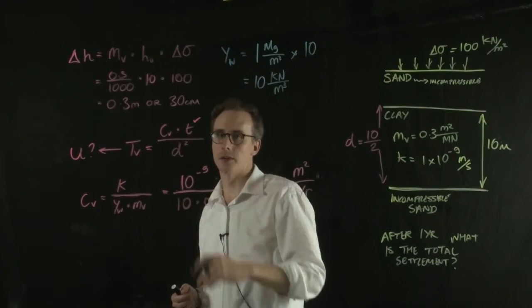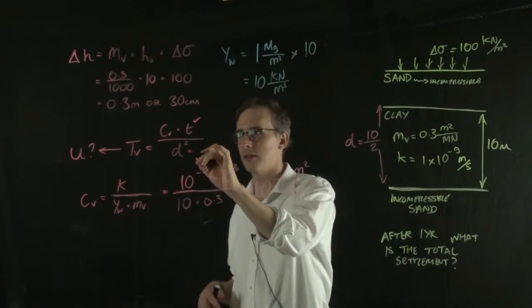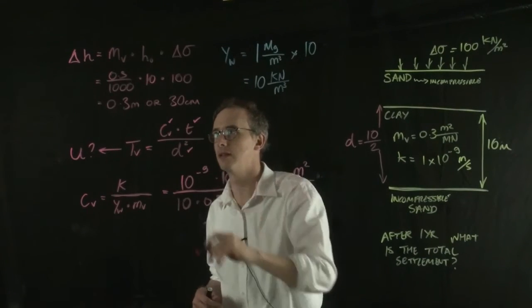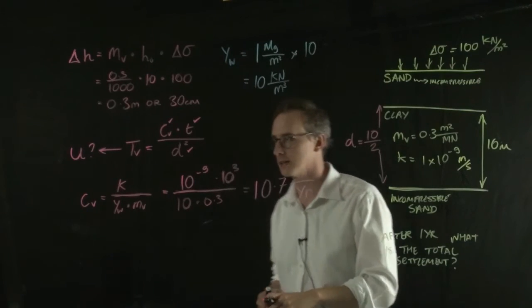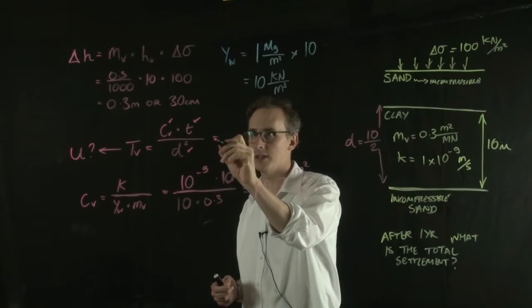So we now have our T value. That was what the question's asking for. We have a D value and we have a CV value. So we should be able to work out what our TV value is, the time factor. So if we put everything into this equation.